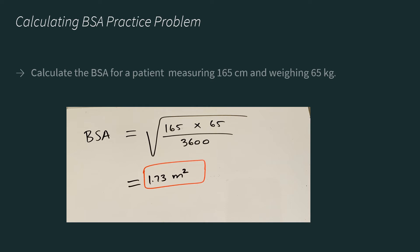I want you to be very careful and look at your units, because the height, like I mentioned, should be in centimeters. So they might give you the height in meters — you have to make sure to convert that to centimeters. They might give you the weight in pounds, and you have to convert that to kilograms. So don't just use the numbers given in the problem. Make sure they have the right units, and if not, convert them.